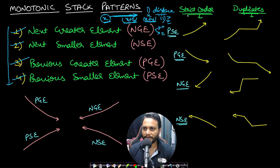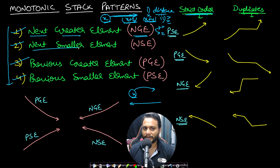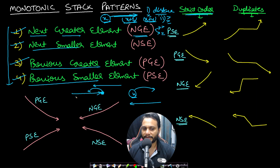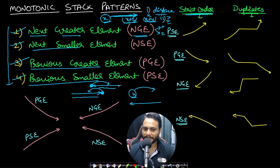Depending on the problem type, you maintain different curves. For previous smaller element, maintain an increasing curve and parse left to right. For next greater or next smaller elements, parse from right to left — because being at a point, you should have seen all items to the right. For previous greater or previous smaller, parse left to right. Parsing right to left lets you remember everything that has happened on the right-hand side.